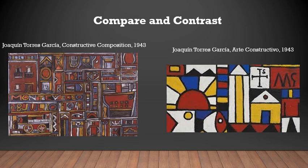Additionally, these two paintings, Constructive Composition and Arte Constructivo, were made in the same year and are using the same basic style of constructivism. Constructivism is a style which originated and was founded in 1915, and its main theme was abstractness. Another thing that these two paintings have in common is that they were inspired by the same thing, which was Neoplasticism.